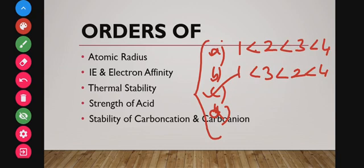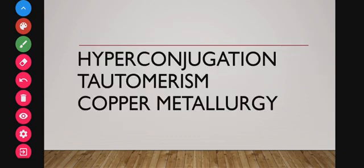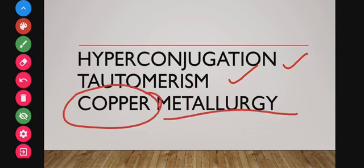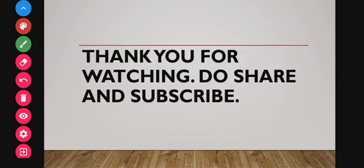Even if you find the right answer, don't lose marks due to carelessness. Other important topics include hyperconjugation, tautomerism, and metallurgy of copper — how copper is prepared and the conditions involved, such as the blast furnace process.